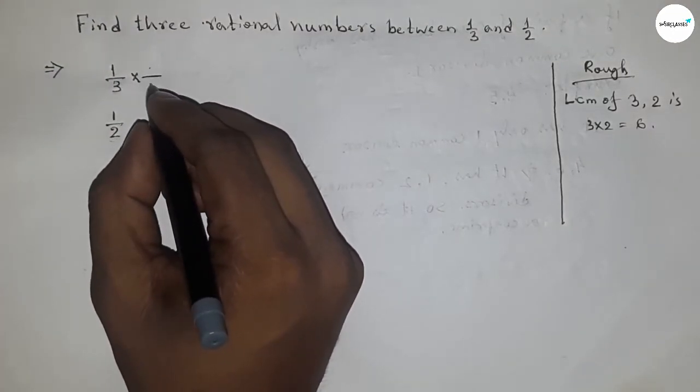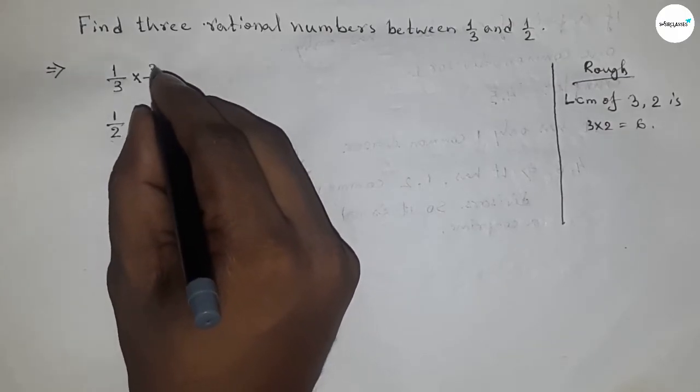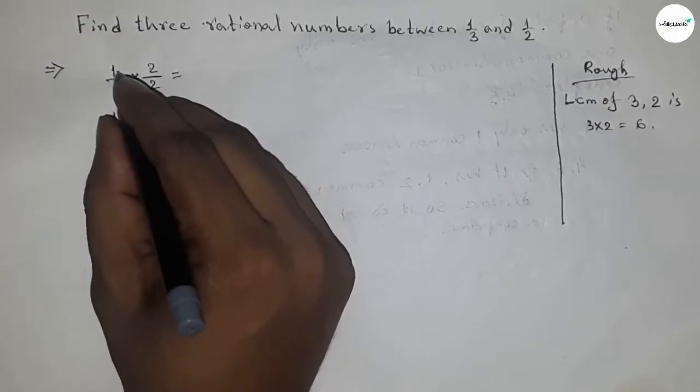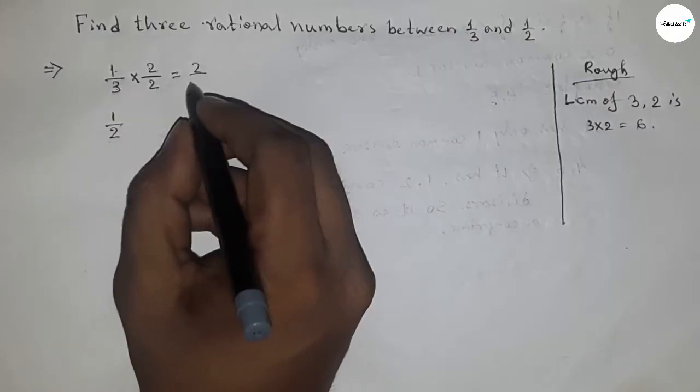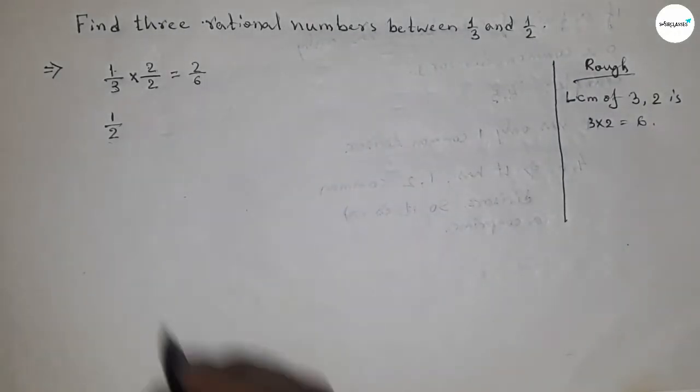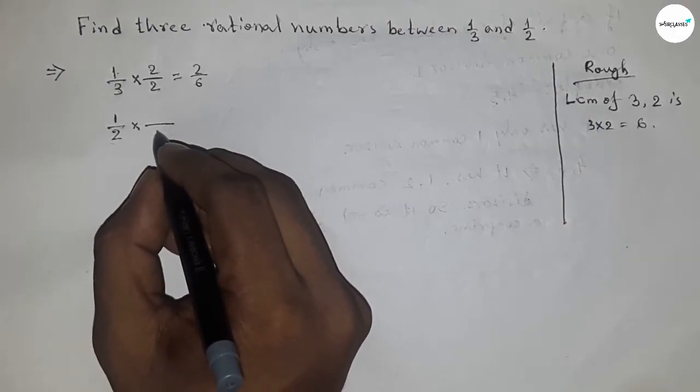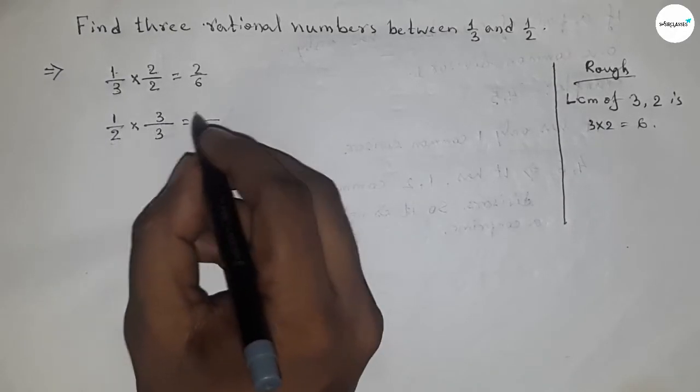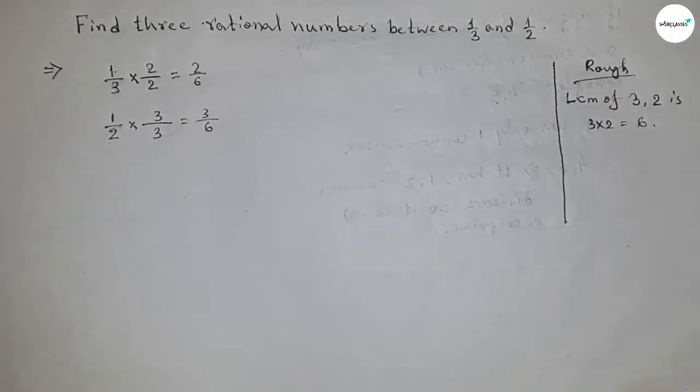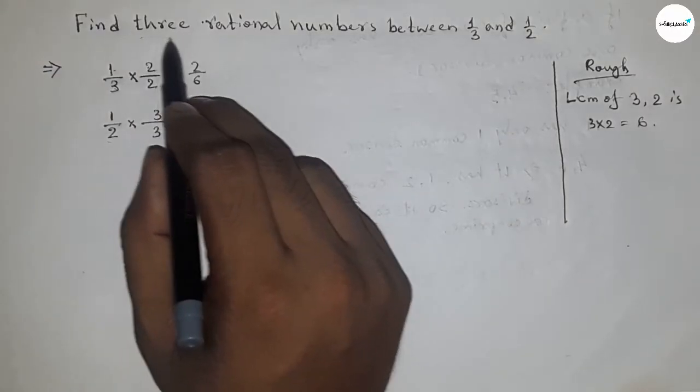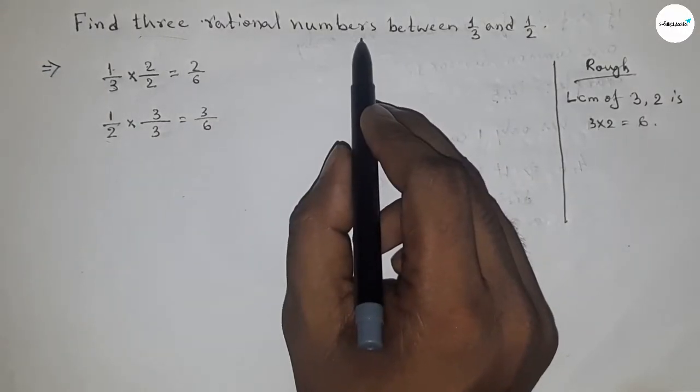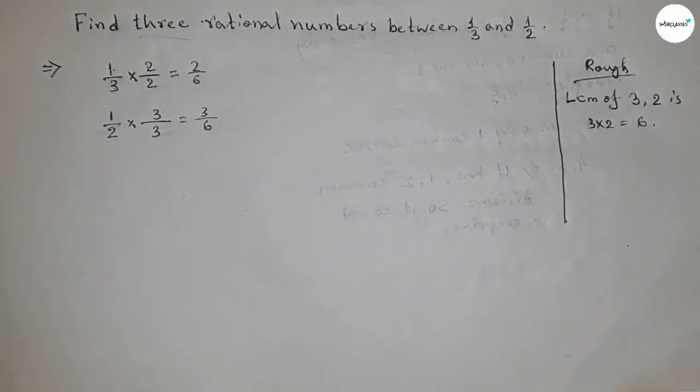What should be multiplying here up and down to get the denominator 6? If you multiply by 2, then we got the denominator 6. Similarly, if here we multiply by 3 up and down, then we can get the denominator 6, so 3 by 6.